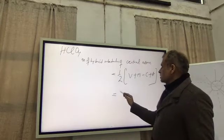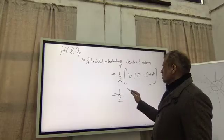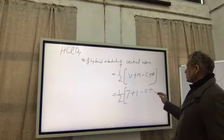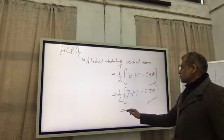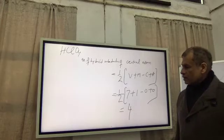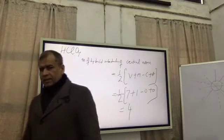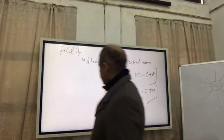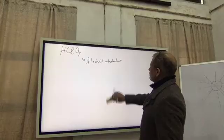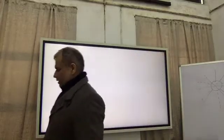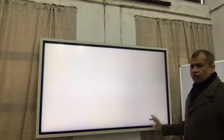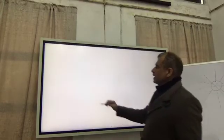In this case, if we apply this formula, we get 1/2 times (7 plus 1 minus 0 plus 0), and this comes out to be 4. Now there is a list.